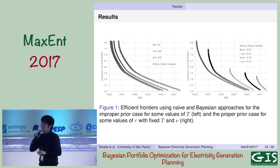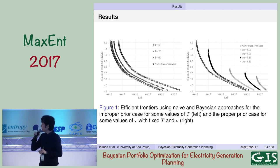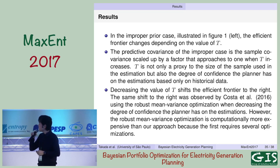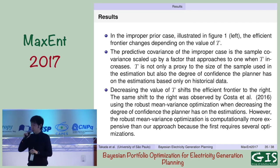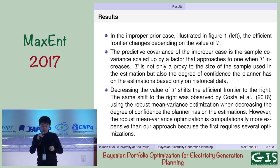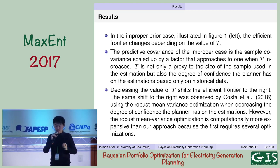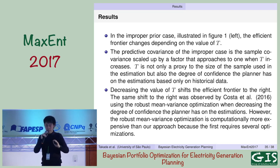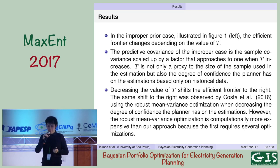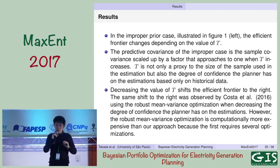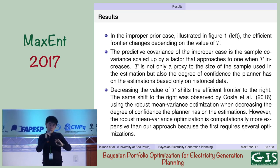In the proper prior Bayesian case, if you change tau you also change the frontier significantly. The improper prior efficient frontier changes depending on the value of T, and the predictive covariance of the improper case is the sample covariance scaled up by a factor that approaches one as T increases. T — the same as in the investment area — represents not only approximately the size of the sample used in estimation, but also the degree of confidence the planner has in the parameter estimates based on historical data. Decreasing the value of T shifts the efficient frontier to the right, and the robust approach used by Costa et al. causes the same effect.